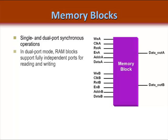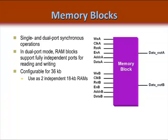The memory blocks, also known as block RAM, support single and dual port synchronous operations. In dual port mode, these block RAMs support fully independent port functionality for both read and write. There are two ports — the A port and the B port — with fully independent clocks, write enables, output enables, address and data, as well as separate data A and data B outputs. Sizes up to 36 kilobits can be configured using a single block, or it can be segmented into two independent 18 kilobit memories. There is also an available parity bit option.